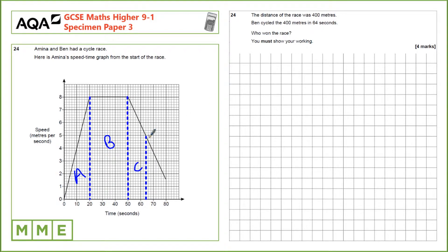If we see that Amina has cycled a distance further than 400 metres by that point, then she obviously beat him. And if hers is lower, then she obviously didn't beat him.